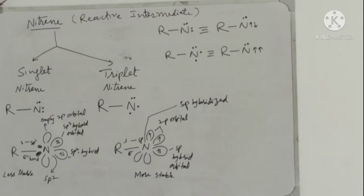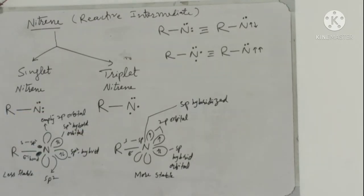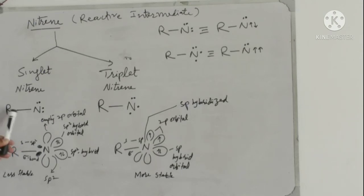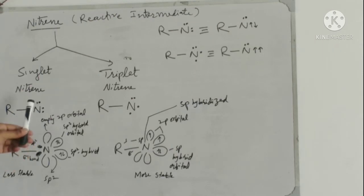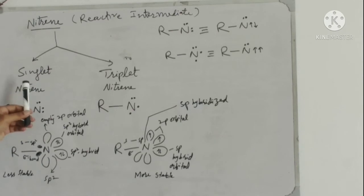Nitrenes are basically of two types: singlet nitrenes and triplet nitrenes. Depending on the distribution of the six electrons — two electrons form a single covalent bond with the monovalent alkyl group, and the four electrons are non-bonding — if these four non-bonding electrons are present in the form of two lone pairs on the nitrogen atom, then they are called singlet nitrenes.